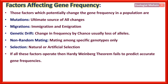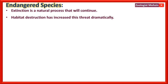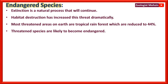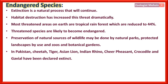Endangered species: Extinction is a natural process that will continue. Habitat destruction has dramatically increased this threat. Most threatened areas on earth are tropical rain forests, which have been reduced to 44%. Conservation may be done through natural parks, protected landscapes, zoos, and botanical gardens. In Pakistan, cheetah, tiger, Asian lion, Indian rhino, chair, pheasant, crocodile, and gavial have been declared extinct.